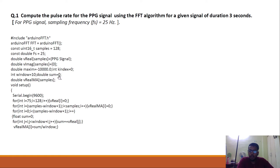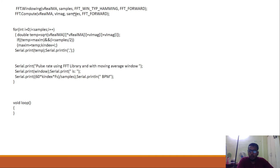The window variable is for the moving average filter, and the double sum variable is also used for calculating the moving average filter. Vreal_MA is going to store the output of the moving average filter when Vreal is passed through it. Since we are taking a PPG signal of 75 values only, we get the initial 75 values and the rest of the values from 75 to 128 are zeroed out. Then we apply the moving average filter and call the Arduino FFT library — first doing windowing to remove energy leakage, and then computing the FFT of the signal.